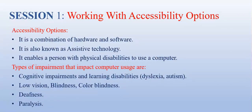There are numerous types of impairment that impact computer usage. These include cognitive impairments and learning disabilities like dyslexia and autism. Some visual impairments such as low vision, complete or partial blindness, and color blindness. And hearing impairments including deafness, and motor impairments such as paralysis.